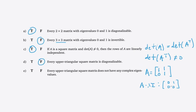To clarify why one free variable means geometric multiplicity 1: the null space of A minus λI is the λ-eigenspace of A. When you write the solution set in parametric vector form, you get only one basis vector because there's only one free variable. The null space is the span of that one basis vector — a line, which is one-dimensional. So the geometric multiplicity, being the dimension of the eigenspace, is just 1. That's why you can look at the number of free variables in A minus λI to get the geometric multiplicity. So D is false.